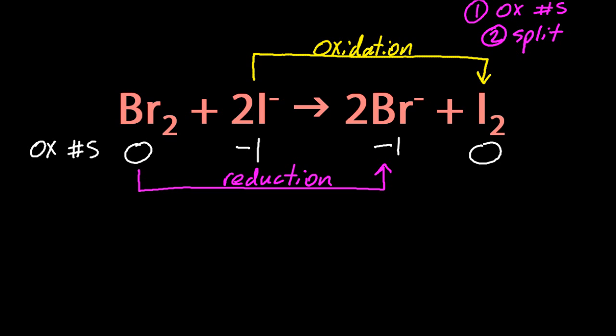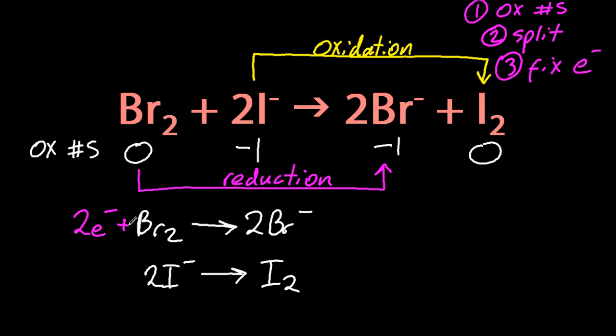Okay, let's split them up into the two obvious halves. So bromine goes to bromide, and iodide goes to iodine. And now fix the electrons. Make sure they're on opposite sides or you've messed up.